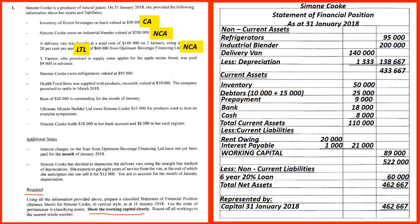A tea farmer who promised to supply apples for the apple nectar blend was paid 9,000 in advance — this is a prepayment, which is a current asset. Simone Cook owns refrigerators valued at 95,000 — another non-current asset. A health food store was supplied with products on credit valued at 10,000, with payment promised for March 2018 — the health food store is a debtor, a current asset.